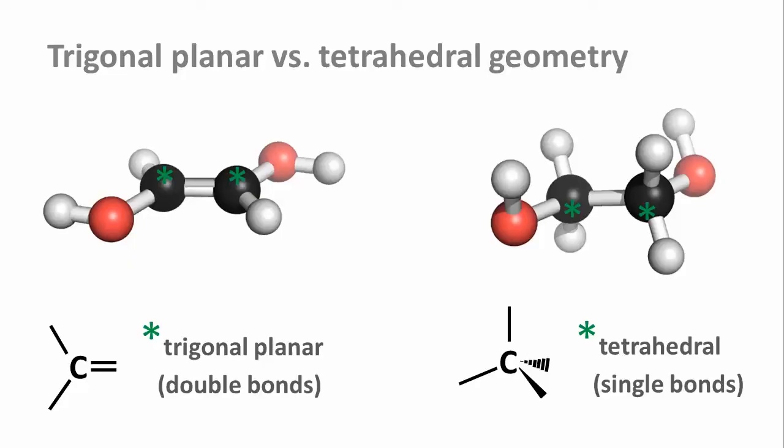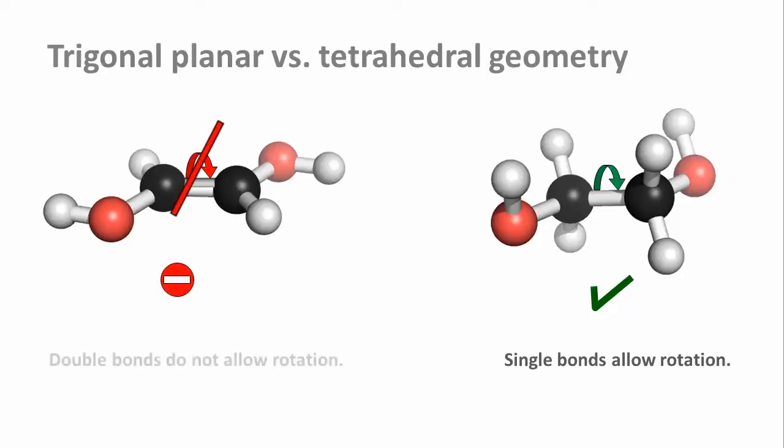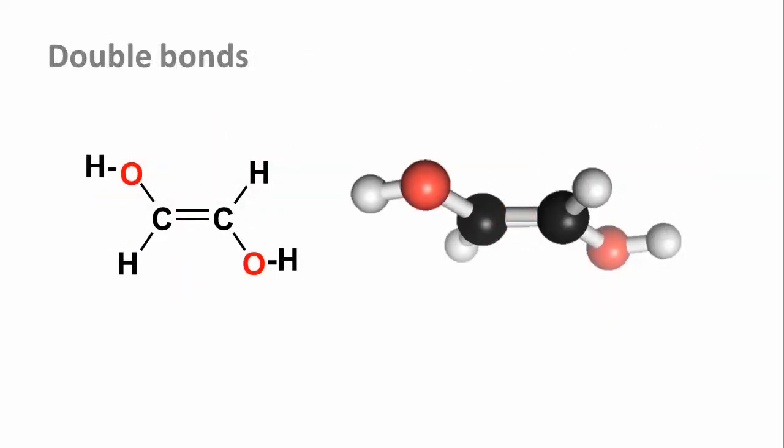A very important difference between single and double bonds is that, as you've seen, rotation around a single bond is possible. A double bond does not allow rotation. The consequence is that the two carbon atoms that form the double bond and all four atoms directly attached to them lie in a single plane.